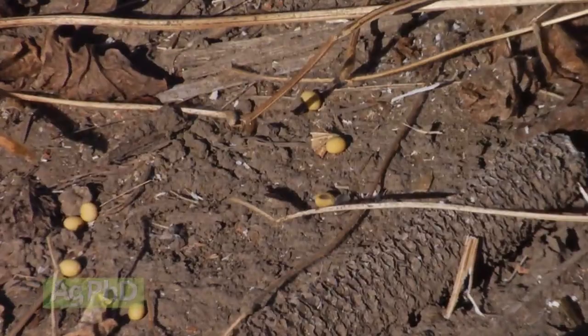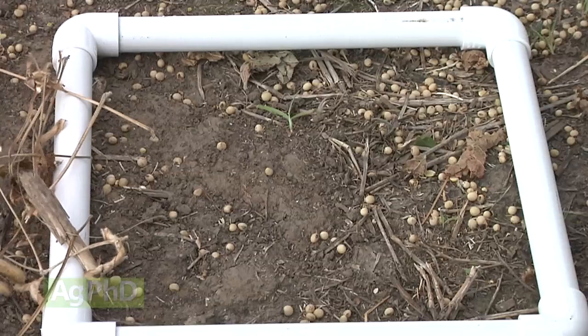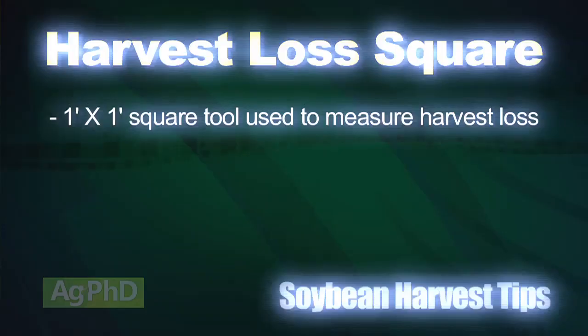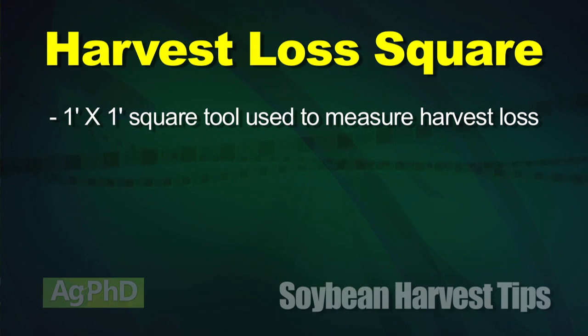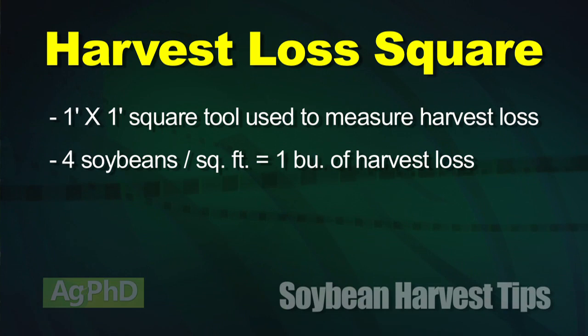On our farm we just took some PVC tubes and made a one-foot square — I've seen other farmers do it with wood — just something easy you can drop on the ground, sweep aside the residue, and see how many soybeans are laying there. If you're seeing four soybeans in that square, you've lost a bushel per acre. If you've got a thousand acres of beans at ten bucks a bushel, that's ten thousand dollars — that's huge. So make sure you're stopping a few times as you're going through, getting out of the combine, checking for loss, and making adjustments as needed.